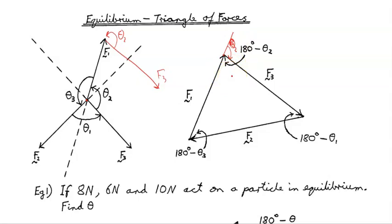And then similar arguments apply for the other triangle. If I now take F2 and I add it to the end of F3 over here, in like this, here's theta 1, so in here must be 180 degrees minus theta 1.